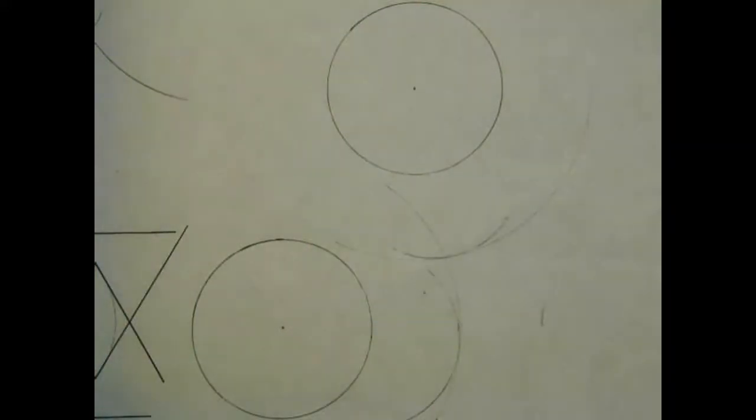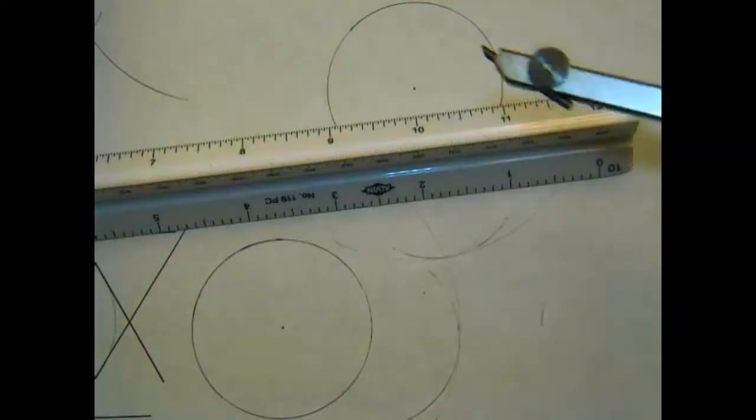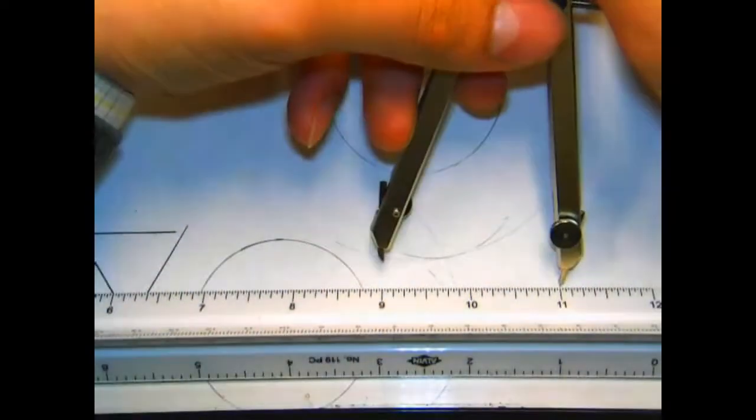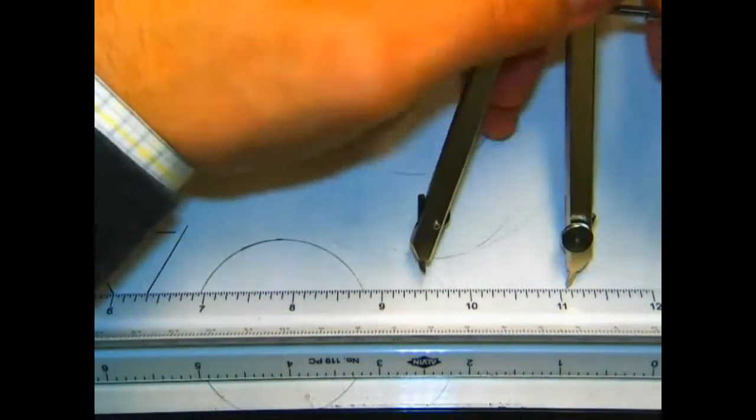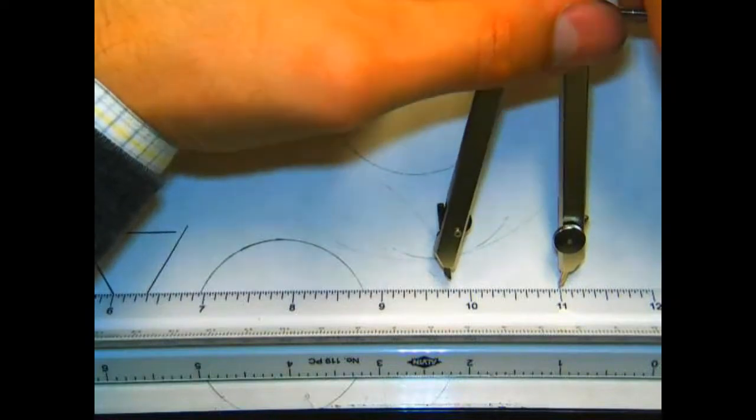These two arcs at the high points of our offset arcs are going to create an intersection point, which is going to be the center point of our tangent arc that we want.